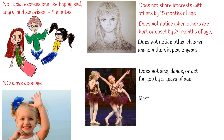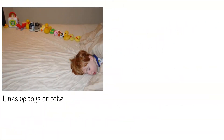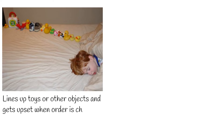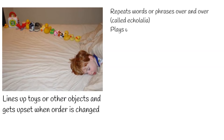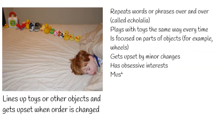Restricted or repetitive behaviors or interests can also be a sign of autism spectrum. These include: lining up toys or other objects and getting upset when the order is changed, repeating words or phrases over and over — called echolalia — playing with toys the same way every time, being focused on parts of objects such as wheels, getting upset by minor changes, having obsessive interests, and needing to follow certain routines.